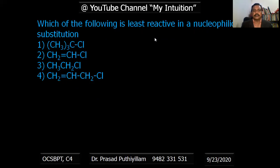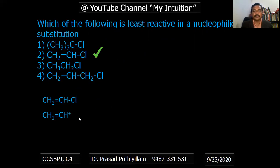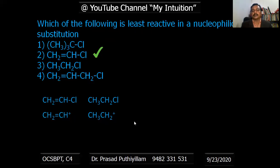Which of the following is least reactive in nucleophilic substitution? Among the four options, the least reactive is option two: CH₂=CH–CH₂Cl (allyl chloride type). When considering the carbocation formed, there is no strong possibility of stabilizing the charge — the CH and CH₂ groups present offer limited support. This makes it less favorable for nucleophilic substitution.